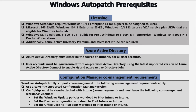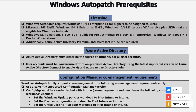Now let's discuss the Windows Autopatch prerequisites. The very first prerequisite is the licensing requirement. Windows Autopatch requires Windows 10 or 11 Enterprise E3 or higher license assigned to the user, or Microsoft 365 E3, E5, Windows 10 or 11 Enterprise E3, E5, or Windows 10 or 11 Enterprise VDA service plan SKUs that are eligible for Windows Autopatch.